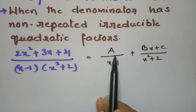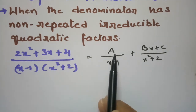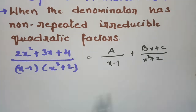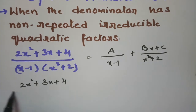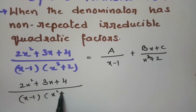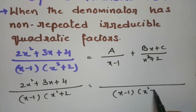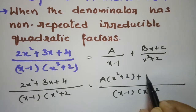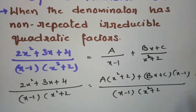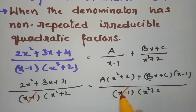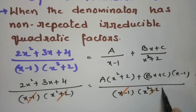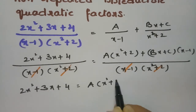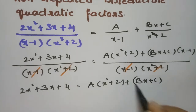Now, same process again. For the linear factor (x − 1) we take single constant A, and for the irreducible quadratic factor inside the square we take the combination Bx + C. So (2x² + 3x + 4) / [(x − 1)(x² + 2)] = A/(x − 1) + (Bx + C)/(x² + 2). Taking LCM as (x − 1)(x² + 2), we cross-multiply: A(x² + 2) + (Bx + C)(x − 1).